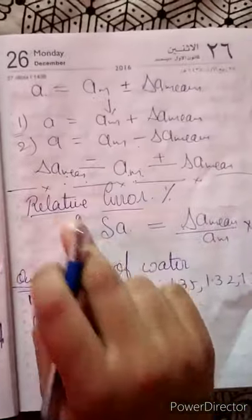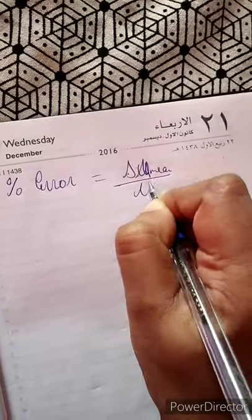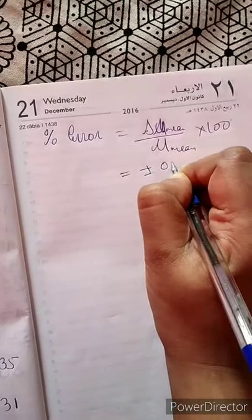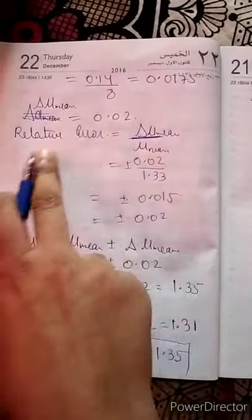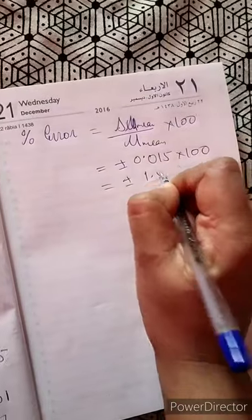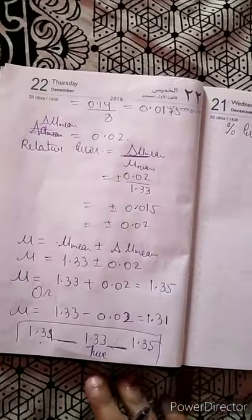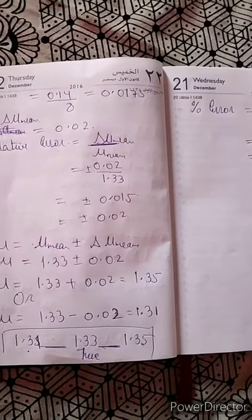For percentage error, as I told you before starting this video, it is delta mu mean divided by mu mean into 100. Delta mu mean is 0.015, so percentage error equals 0.015 into 100, which gives plus minus 1.5 percent. So your error is 1.5 percent. Thank you students for watching the video. I will continue in part 3 with more numerical practice, so please stay with me. Thank you, Khuda Hafiz.